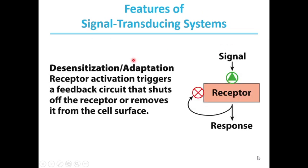Another feature is desensitization or adaptation. The sensitivity of receptor systems is subject to modification. When a signal is present continuously, the receptor system becomes desensitized, and the receptor no longer responds to the signal. When the stimulus falls below a certain threshold, the system becomes sensitive again — that is how the desensitization or adaptation mechanism works.